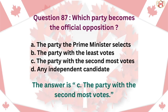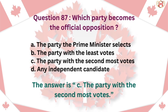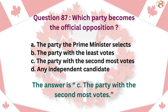Question 87: Which party becomes the official opposition? A. The party the Prime Minister selects, B. The party with the least votes, C. The party with the second most votes, D. Any independent candidate. The answer is C. The party with the second most votes.